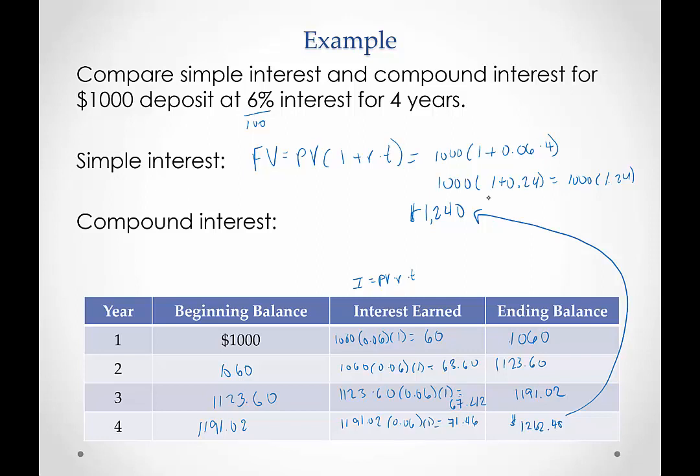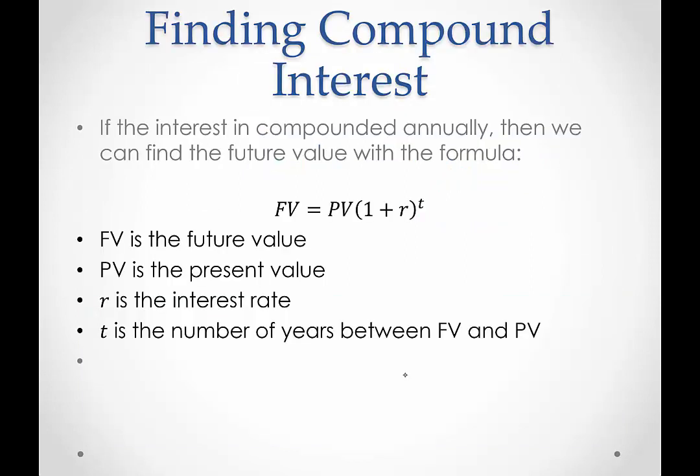Now, this was kind of laborious. What if it was 10 years? I don't want to do this table all the way to 10 years. In fact, even doing it to 4 years was kind of annoying. Luckily, there is a formula that we can use. I just wanted to show how we could use simple interest to calculate compound interest. But let's talk about the shortcut. So the shortcut here, you'll notice that every time I was multiplying by 0.06. When we have that repeated multiplication, we use exponents. So in this formula for the compound interest, we're going to have some exponents involved. Here it is.